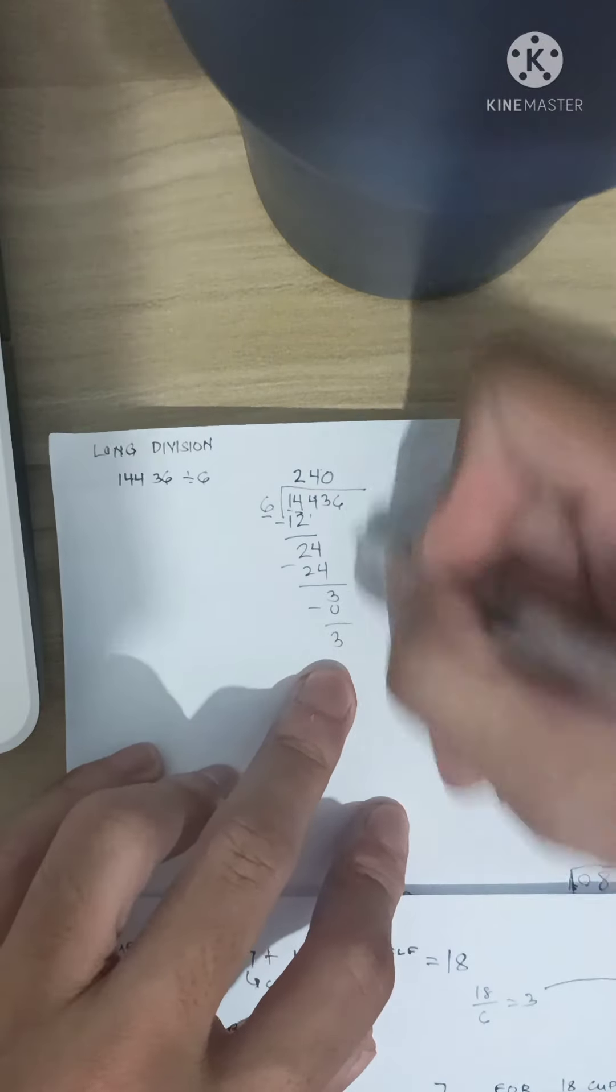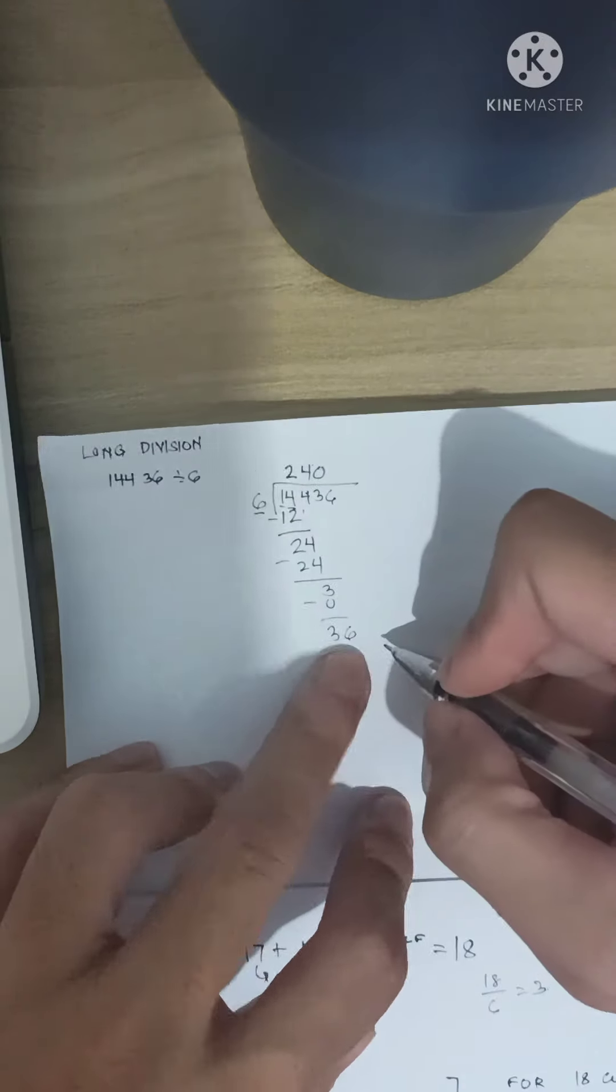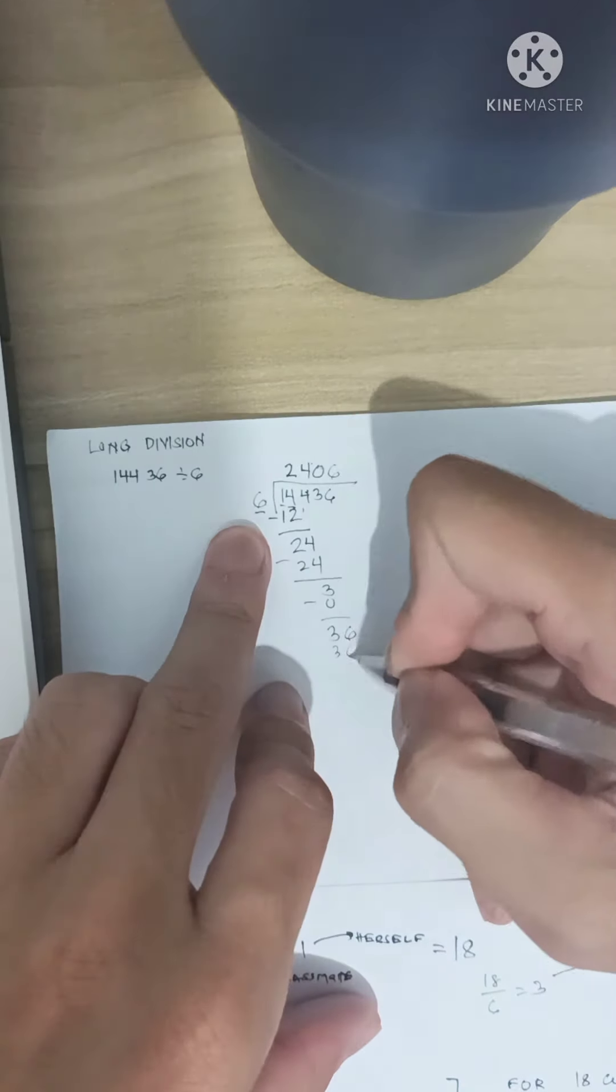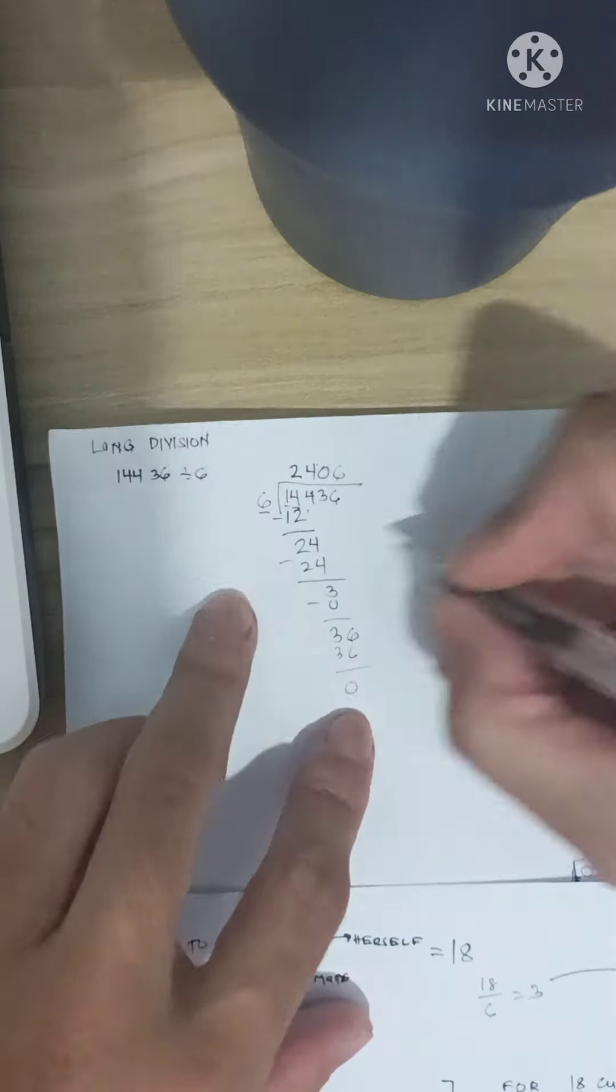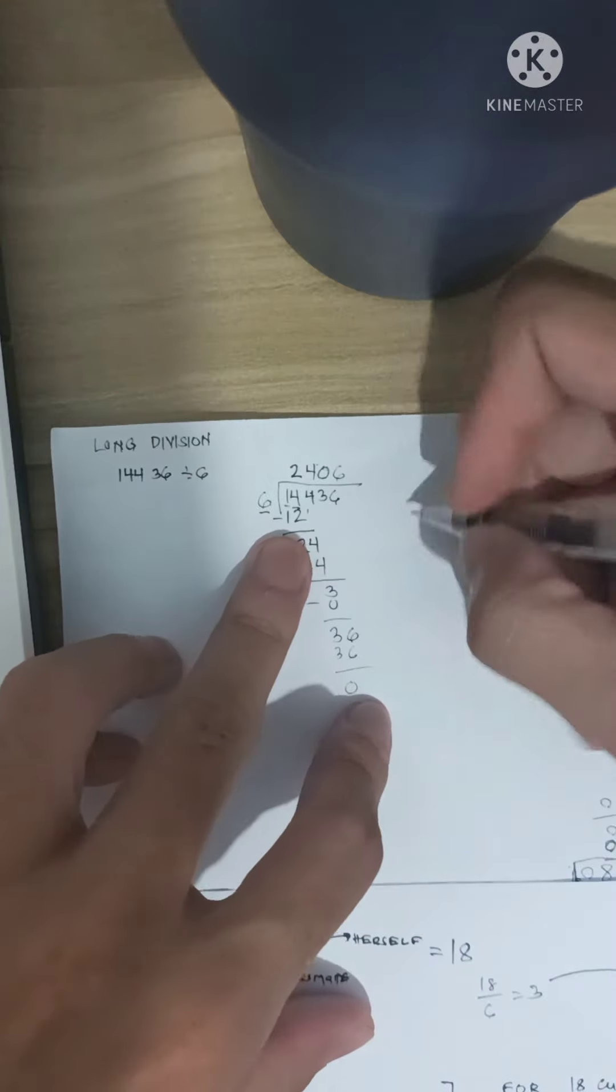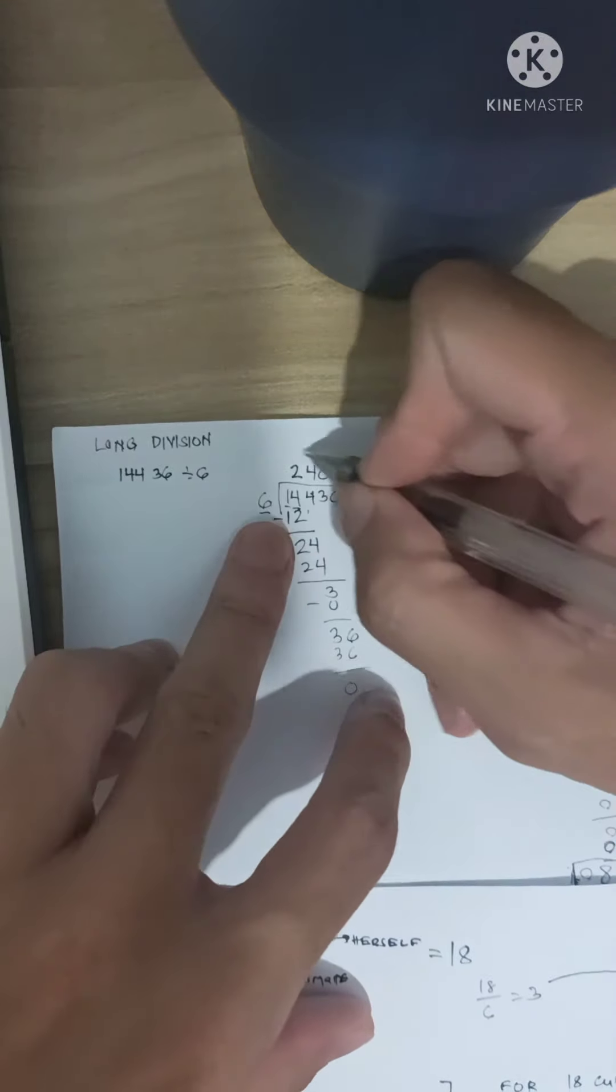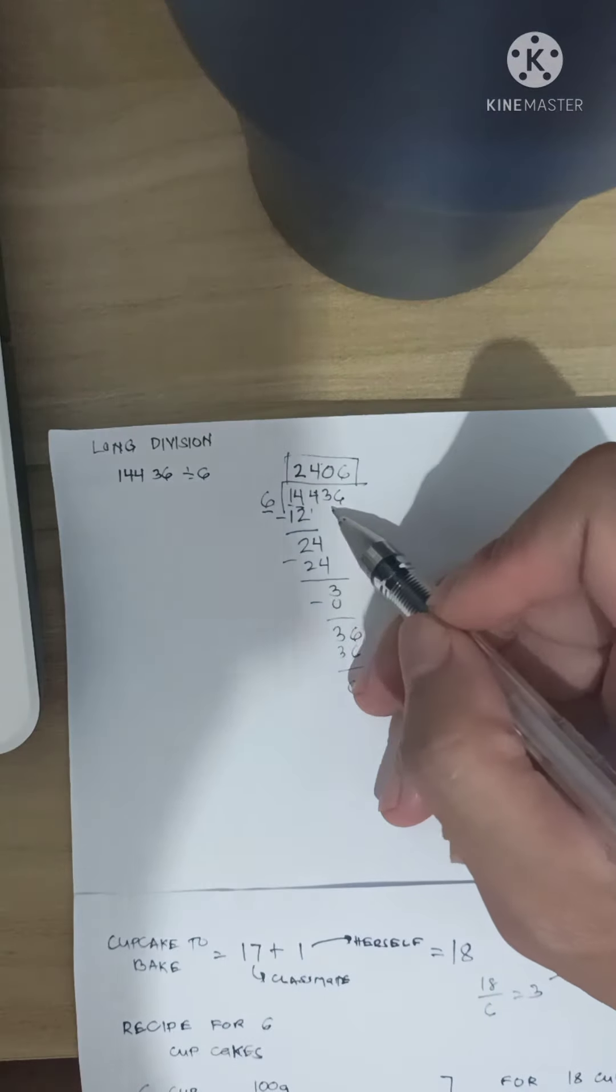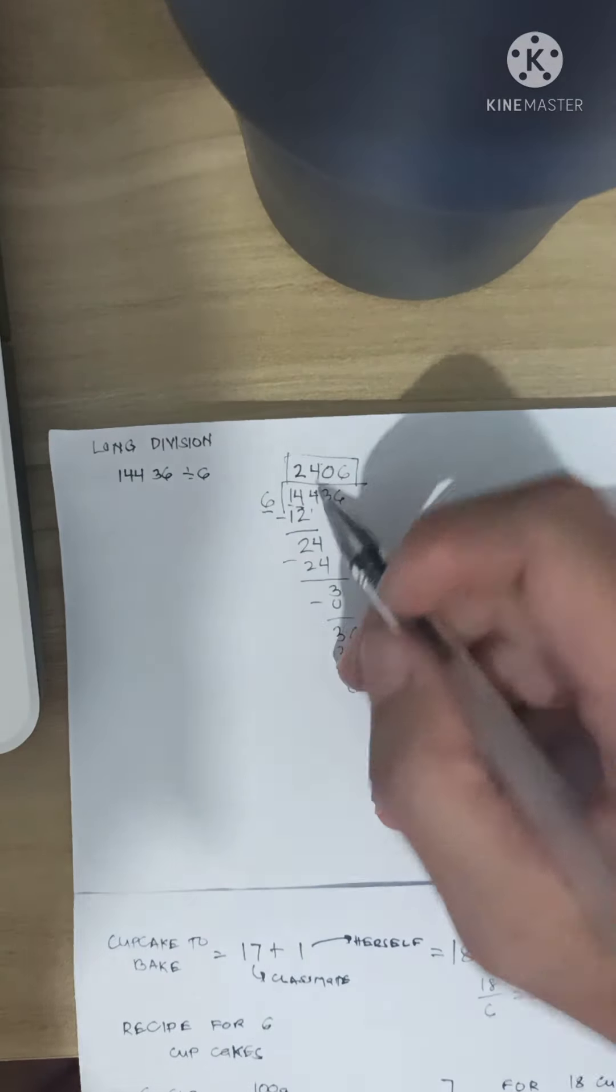And then, we bring down the next number, 6. 36 divided by 6 is 6. 6 times 6 is 36. And we don't have a remainder. So, our final answer is 2,406. 14,436 divided by 6 is 2,406.